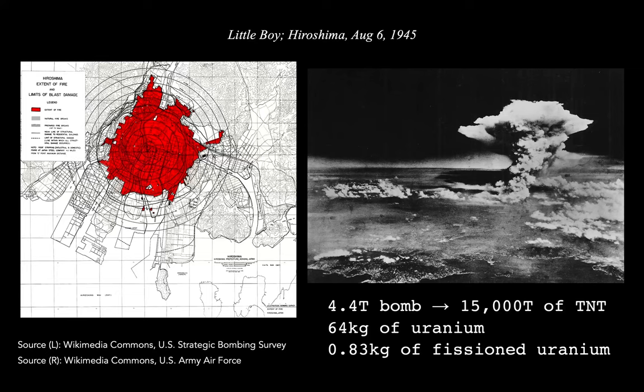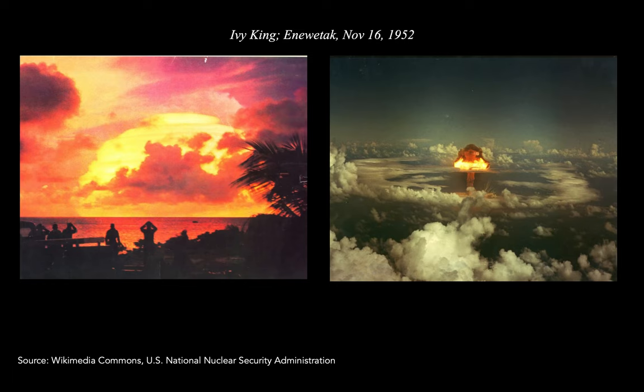Hence, less than a kilogram of uranium could deliver the same destructive force as 15,000 tons of TNT. And in fact, this 1.3 percent is still very inefficient. In just a few years, the technology improved, and in 1952, when the U.S. tested the Ivy King device, roughly the same amount of uranium was used to match 500,000 tons of TNT.